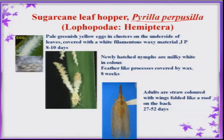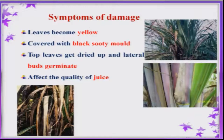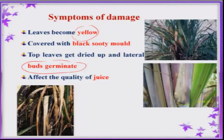The sugarcane leaf hopper, Pyrilla perpusilla, is also one of the important sucking pests occurring throughout India, but major states are Punjab and Uttar Pradesh where it occurs continuously. Both nymphs and adults suck the sap, and because of continuous sucking the margins of the leaves become yellow. This pest also emits honeydew secretion on the leaf surface, causing black sooty mold development. Because of continuous attack, lateral bud germination is also seen, the juice quality is reduced, and ultimately there is an overall reduction in yield.